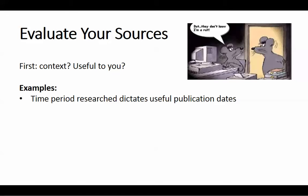Some examples: the time period that you're researching will often dictate useful publication dates. One of the things we'll talk about as a specific factor is publication dates — when was something created? So if you're researching a historical event, something that was published in the past around that historical event may in that context be very useful. So it's not always the case that something more current is more useful. It will depend on the context.